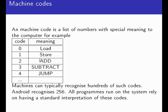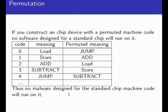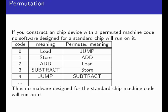What if you change the code? If you change the code, the semantics no longer works. One way of doing that is to permute the opcodes — have the same set of opcodes in semantic terms, but have different numbers standing for them. No software running on a standard chip will run on the permuted chip. So where previously zero meant load, now it means jump; where one meant store, now it means add. No malware designed for the standard chip machine code will be able to run on this.